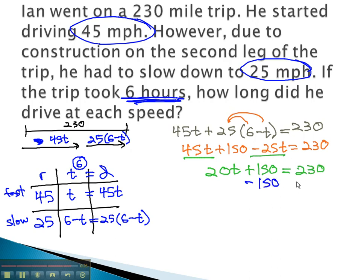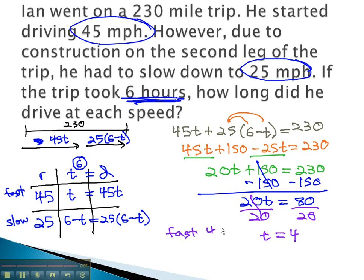Subtracting 150 from both sides as we start to isolate the t. 20t is equal to 80. Finally, dividing by 20 will give us t equals 4. He drove fast for 4 hours, and slow 6 minus 4, 2 hours.